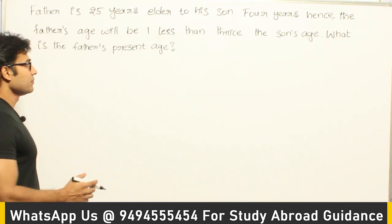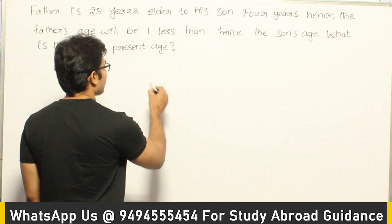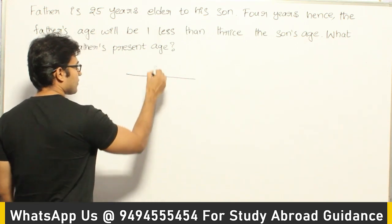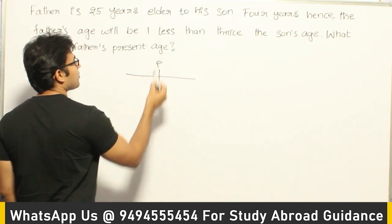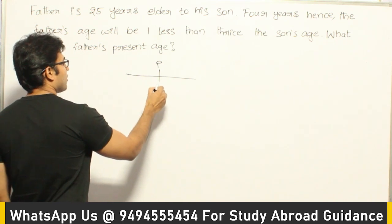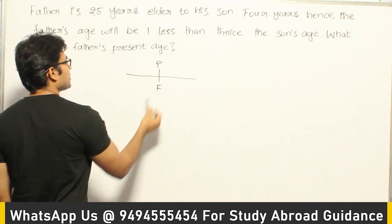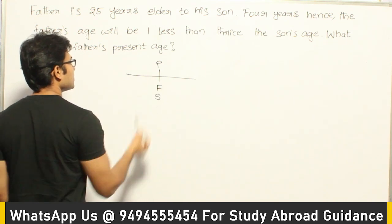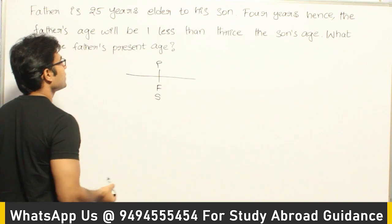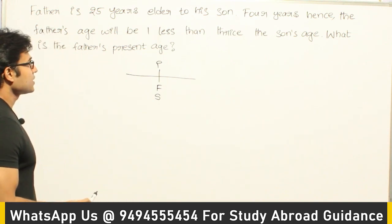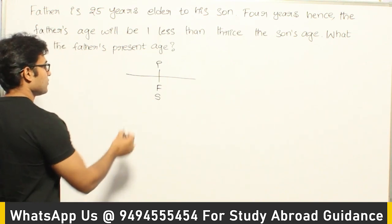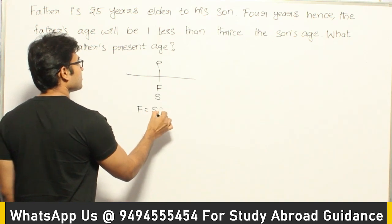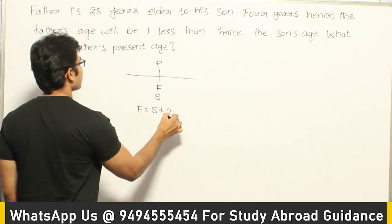So what they are trying to say is — let us say this is the present. At present, let father's age be F and son's age be S. They are saying that father is 25 years elder to his son, which means F equals S plus 25.